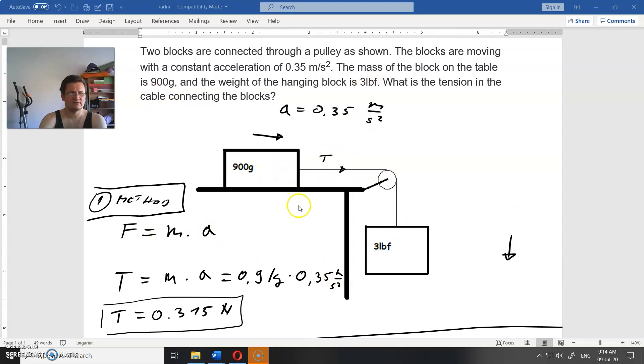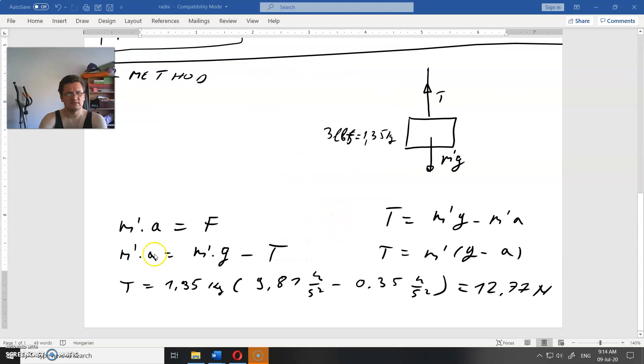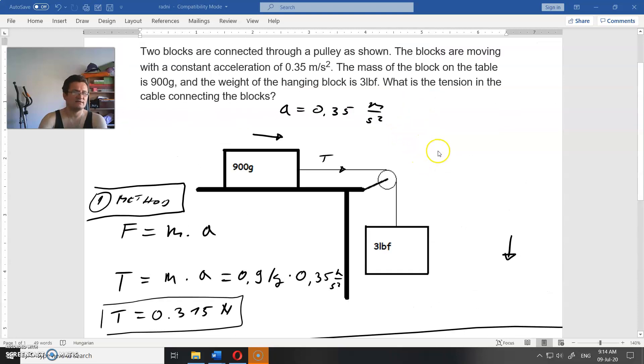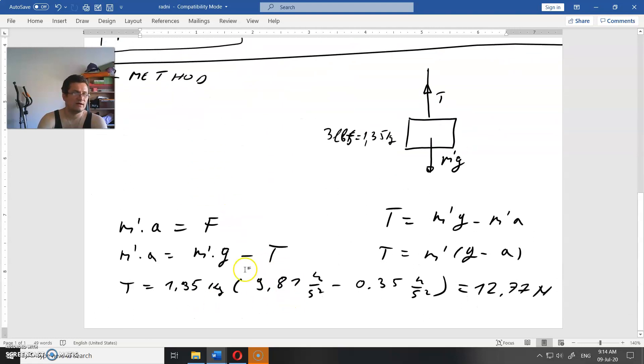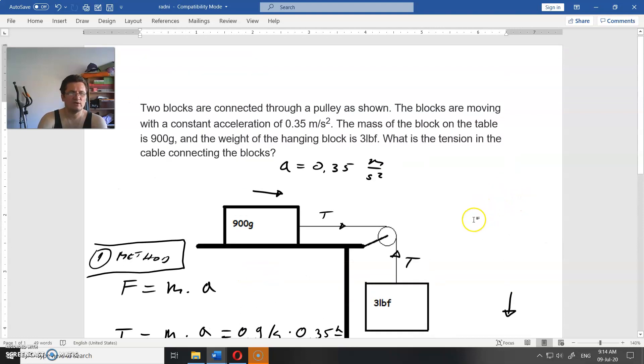When you are searching for frictionless motion for these masses connected through pulley, you use this equation for this mass and this equation for that mass. Then you find the tension here and here is the same, and you find acceleration. You have two unknown magnitudes with two equations, that is not difficult to solve. But when you have friction, you have to add friction and so on.